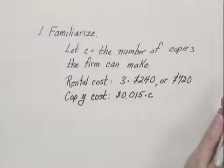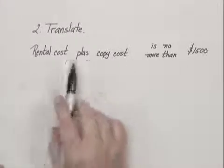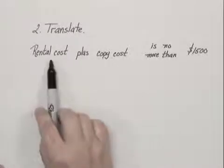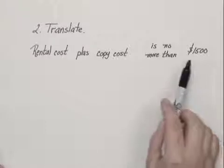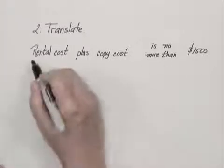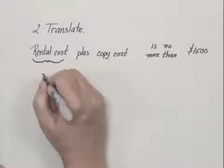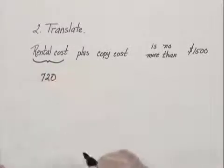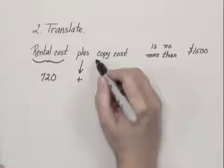Step two is to translate. When we translate, we first try to rewrite the problem in English in a succinct way, and we can say that the rental cost plus the copy cost is no more than $1,500. We just found in the familiarize step that the rental cost is $720, and again, everything is in dollars now, plus the copy cost.